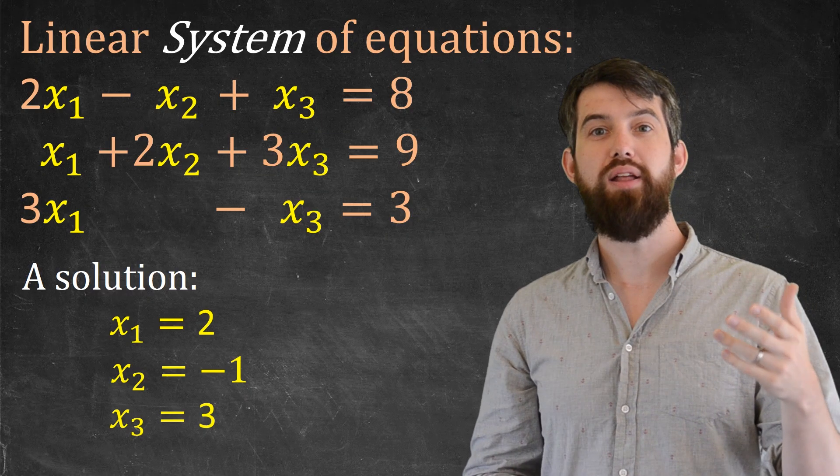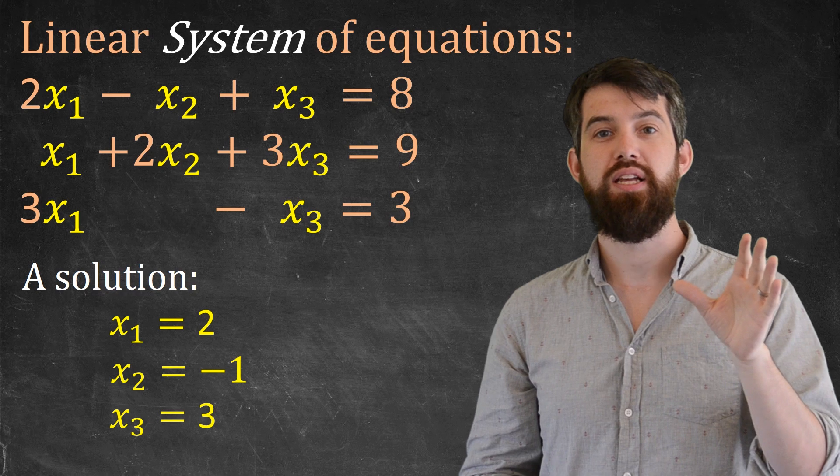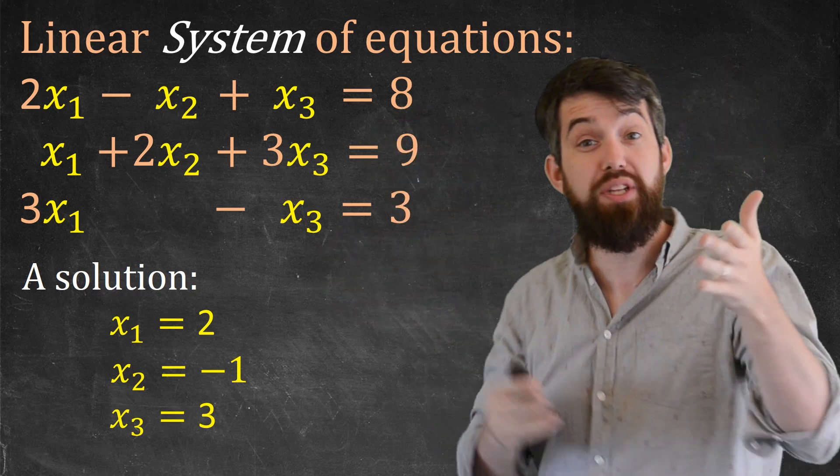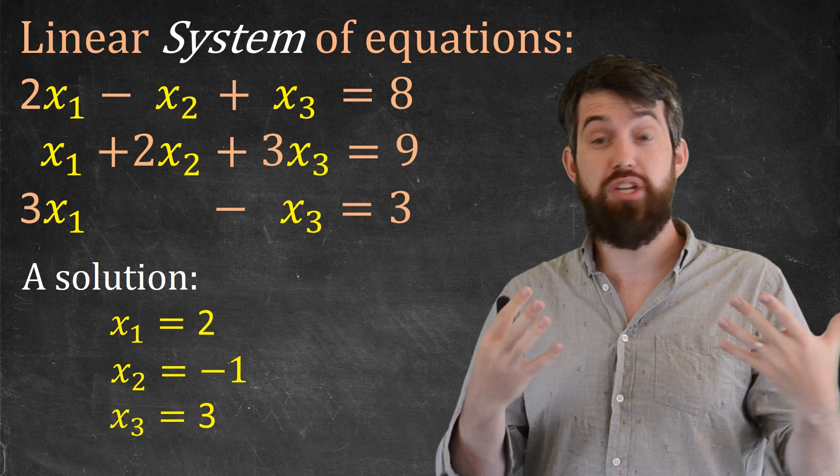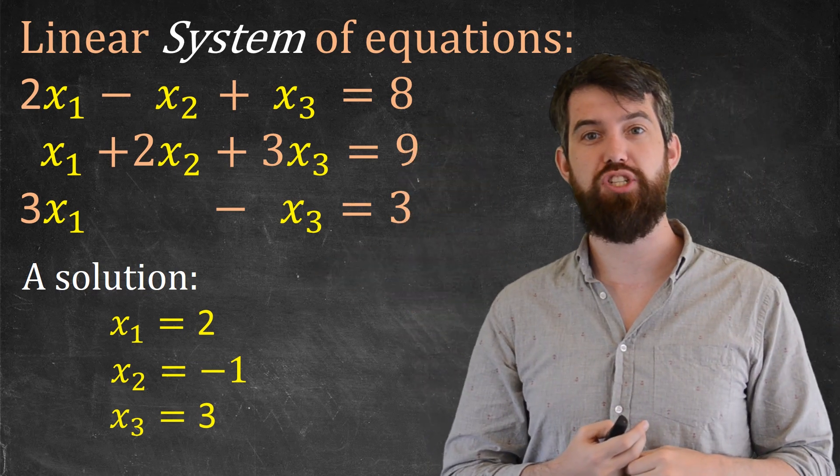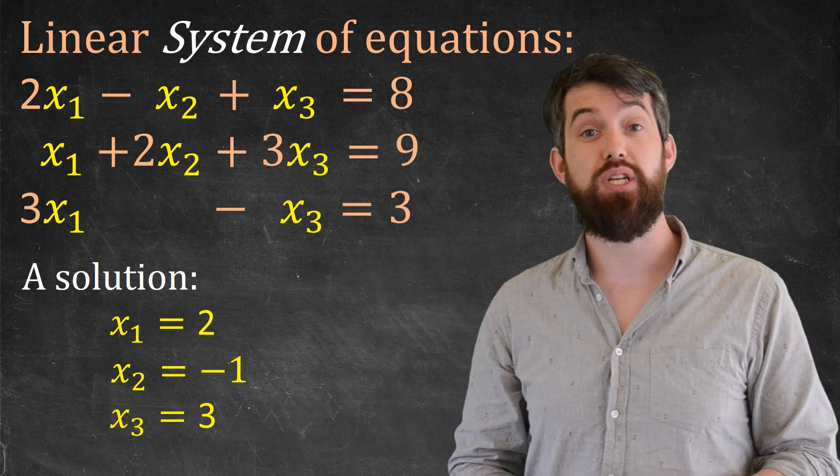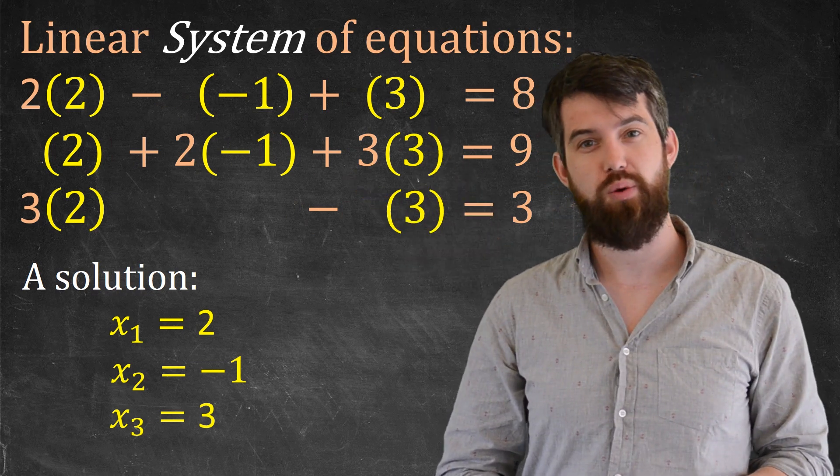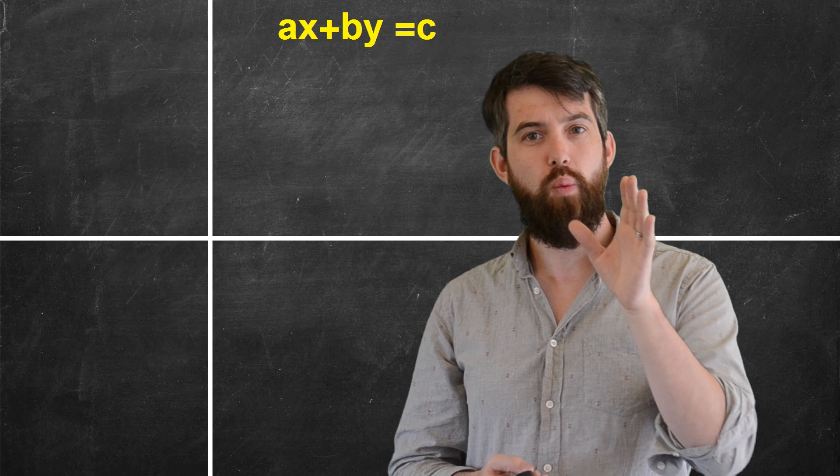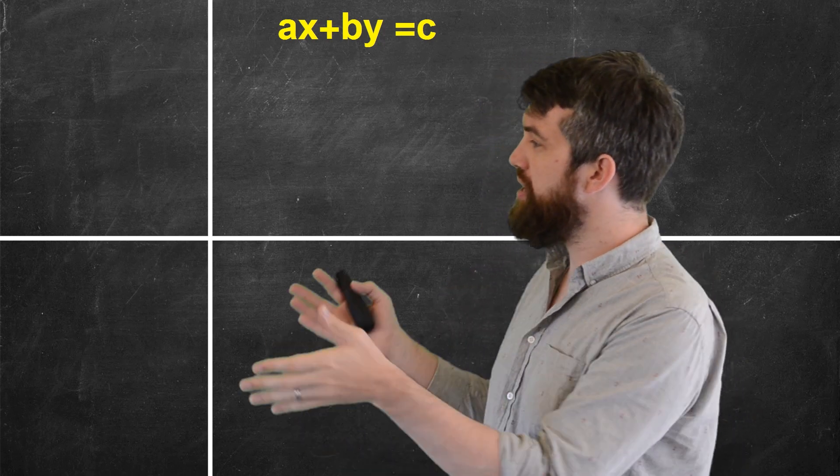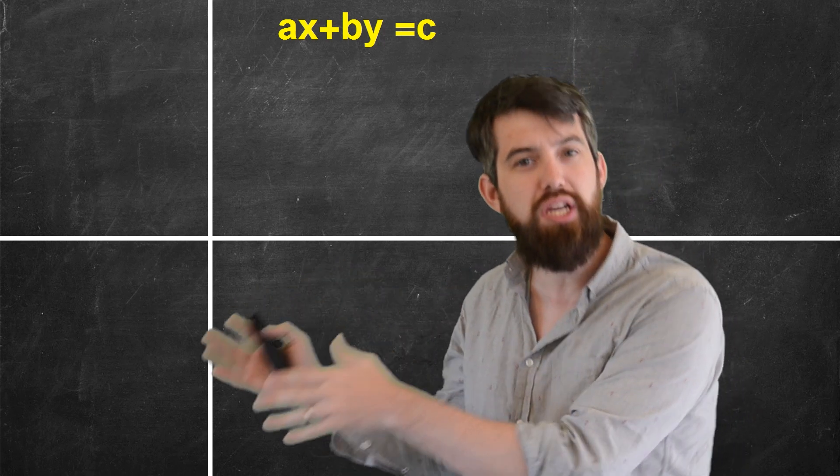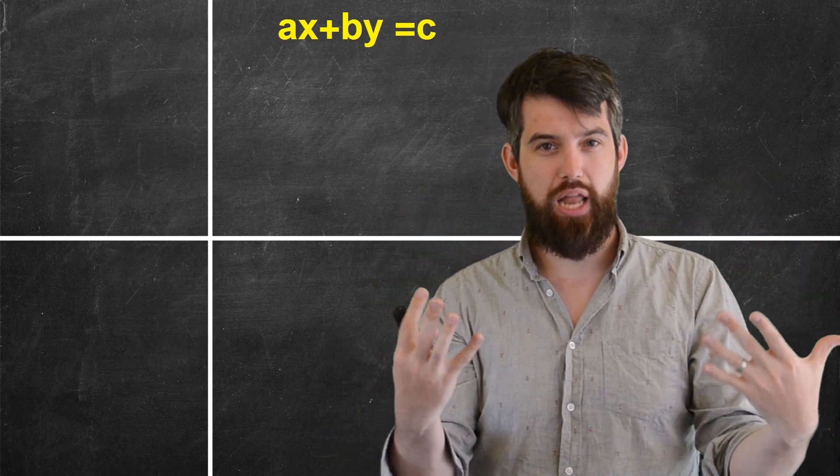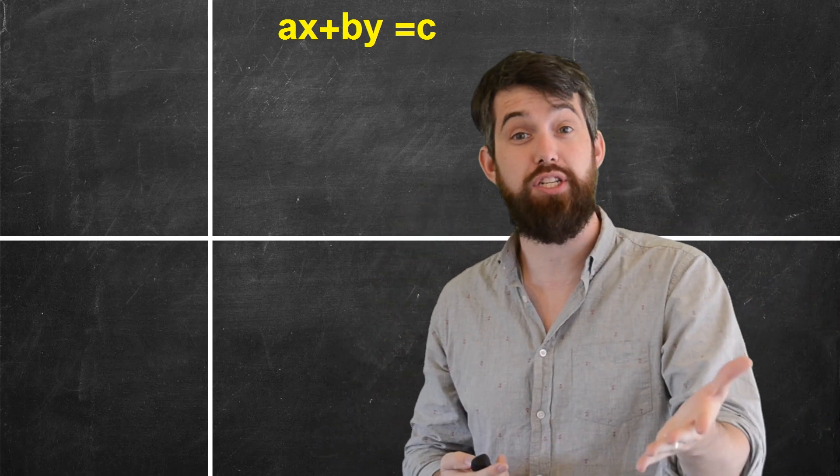In the last video, we saw linear systems of equations algebraically, where I just gave you the list of equations and what we saw was that a solution to this algebraic linear system of equations was just some listing of numbers such that if I took those numbers and plugged it in, all the equations were true. But what we want to do in this video is to try to go and look at what happens geometrically. I want to investigate how can I visualize what a linear system of equations really is.